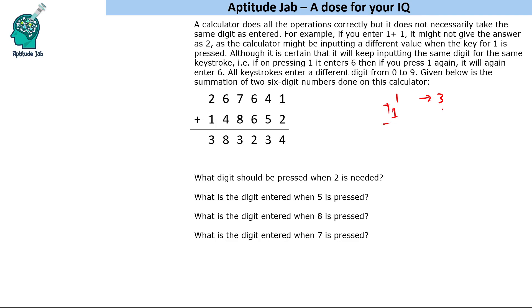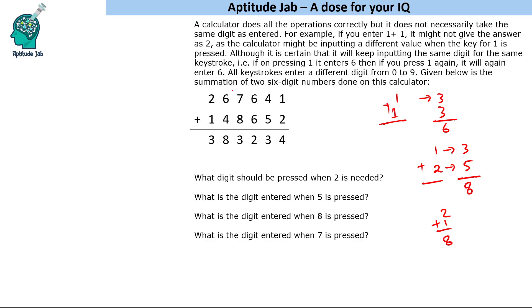It is given that the calculator will keep inputting the same digit for the same keystroke. For example, if on pressing 1 it enters 3, then doing 1 plus 1 gives 3 plus 3, which is 6. For another case, if 1 enters 3 and 2 enters 5, then 1 plus 2 always gives 8. So it has faulty but consistent keys. All keystrokes enter a different digit from 0 to 9, and it is giving you the sum of two 6-digit numbers.